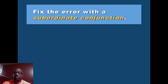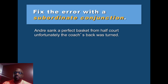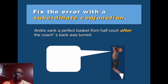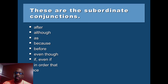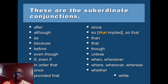Or you can fix the error with a subordinating conjunction. For example: 'Andre sank a perfect basket from half court after the coach's back was turned.' This reduces one of the two clauses to an incomplete thought. You can use any subordinating conjunction to fix a fused sentence by inserting it to subordinate one of the clauses.